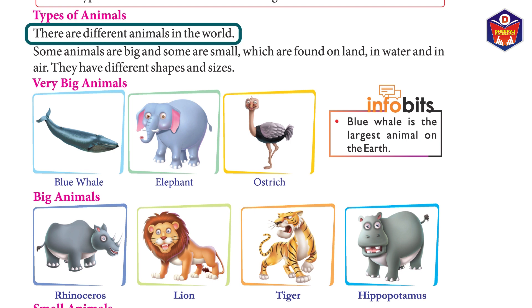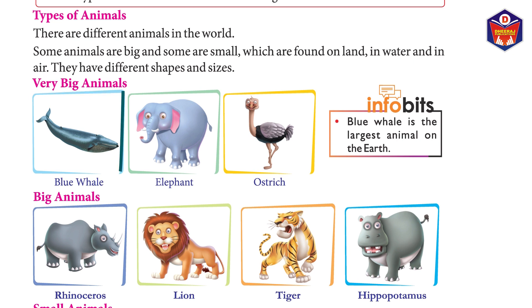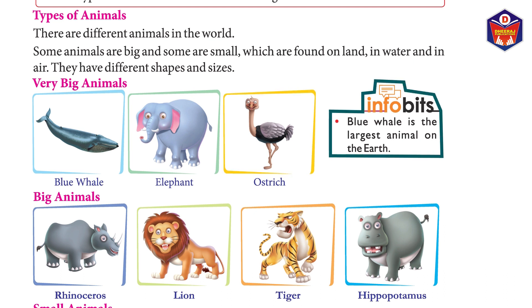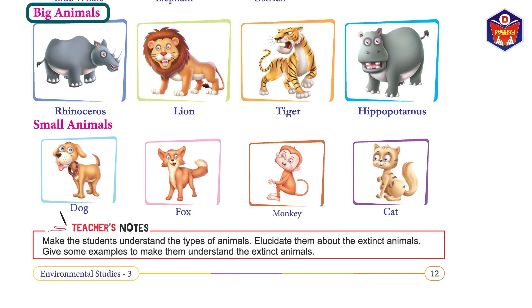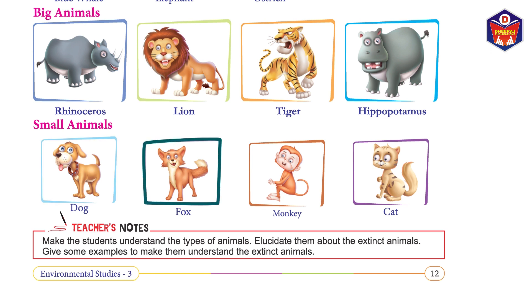There are different animals in the world. Some animals are big and some are small, found on land, in water, and in air. They have different shapes and sizes. Very big animals include the blue whale, elephant, and ostrich. The blue whale is the largest animal on Earth. Big animals include rhinoceros, lion, tiger, and hippopotamus.